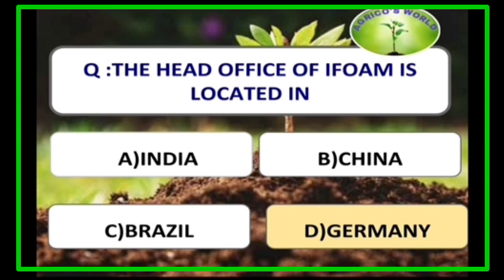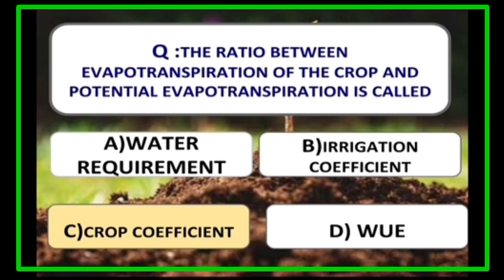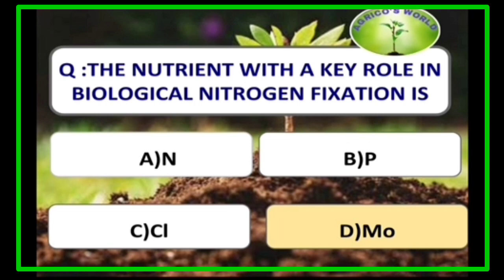The head office of IFOAM is located in Germany. IFOAM stands for International Federation of Organic Agriculture Movement. The ratio between evapotranspiration of the crop and potential evapotranspiration is called the crop coefficient (Kc). The nutrient with a key role in biological nitrogen fixation is molybdenum.